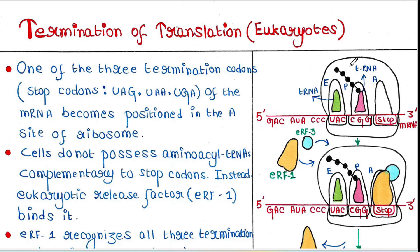This is the ribosome, and this is the mRNA. There are three termination codons, or stop codons, in the mRNA. Those are UAG, UAA, and UGA. The ribosome moves along the mRNA, scans all the codons, makes polypeptide chains, and reaches the stop codon.